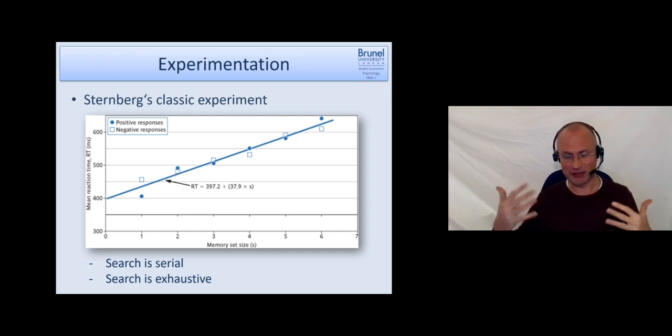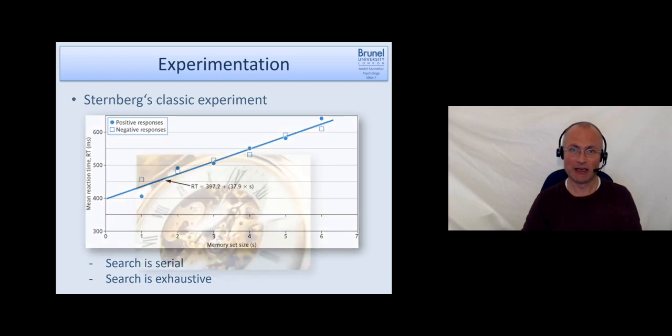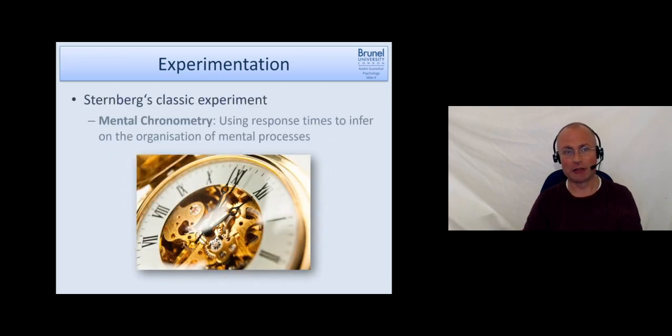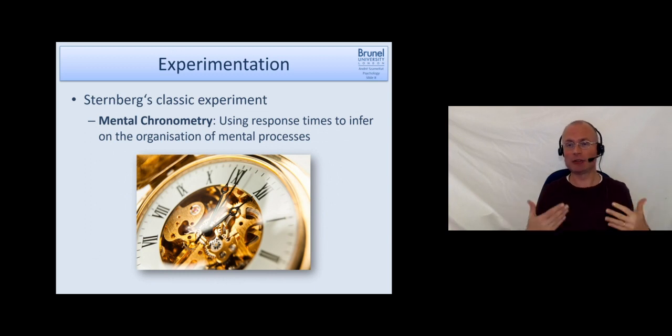This approach is called mental chronometry, so the idea of using response times to infer on the organization of mental processes. I think Sternberg's experiment demonstrates this in a fantastic way and hopefully easy to follow and understand way. So this mental chronometry is really a huge foundation and basis for the way cognitive psychology works and how they use experiments to create concepts and ideas of mental processes and how our mind works and does things like perception, attention, memory, and so forth.